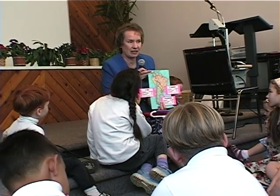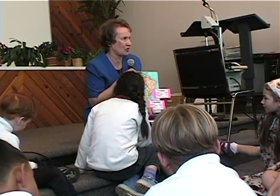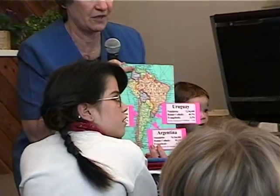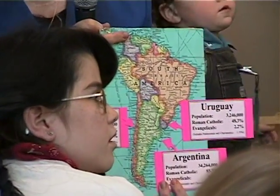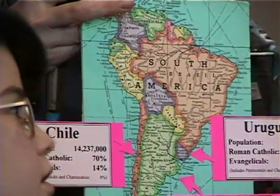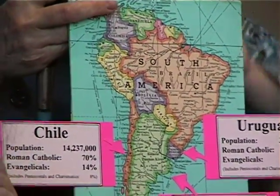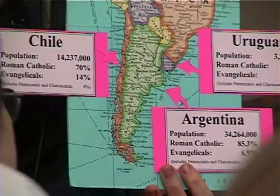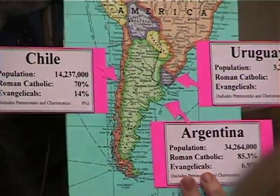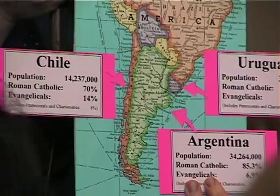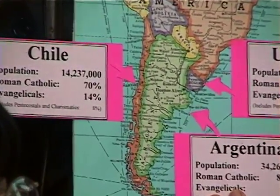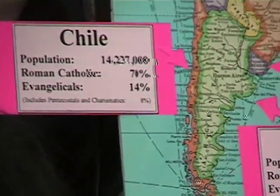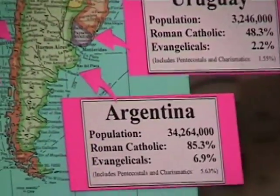Well, each flag has something that it represents. I'm not sure what the Canadian flag represents. Can anyone tell me what the maple leaf stands for? The red maple — provinces and territories. How many of you know what the United States flag looks like? It's got stars and stripes, and it has 50 stars. Why does it have 50 stars? 50 states.